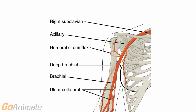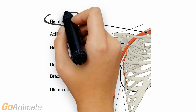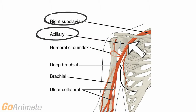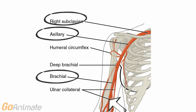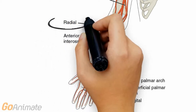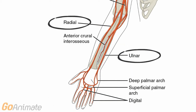Looking at the upper extremity, we see the axillary artery as a continuation of the subclavian. It is called the axillary as soon as it emerges from beneath the clavicle. The axillary becomes the brachial, which splits into radial and ulnar arteries, branching into the superficial and deep palmar arches and digital arteries.